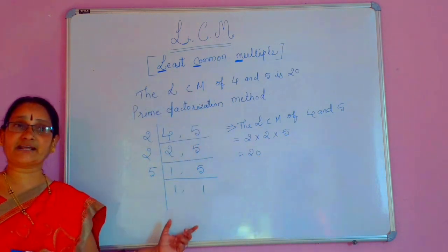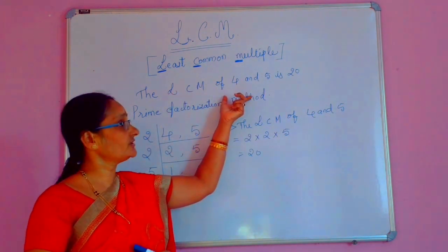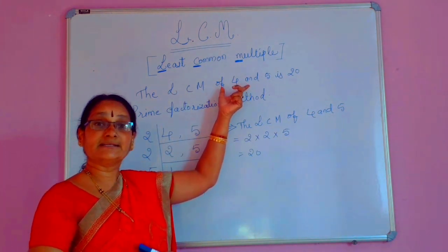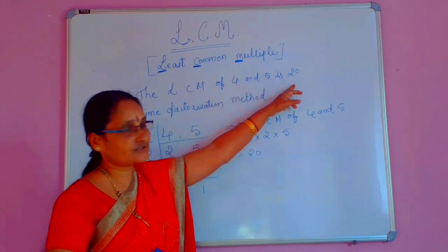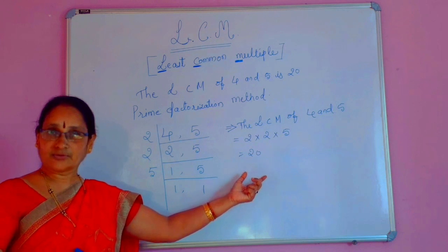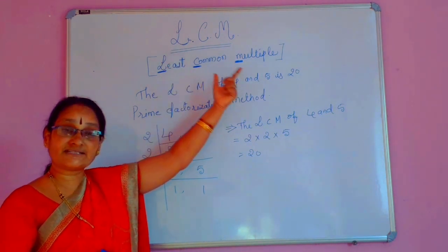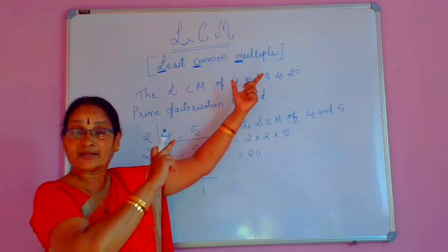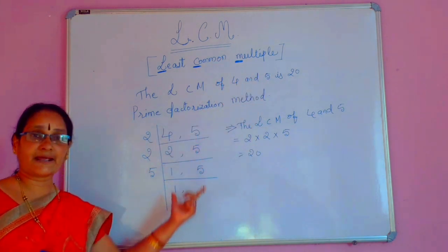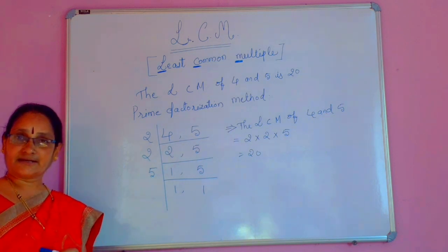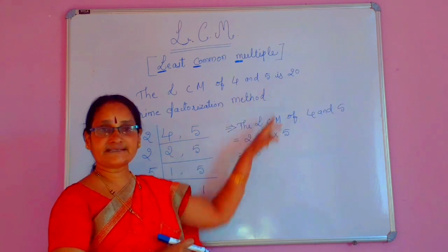By which method did we first find out this LCM? By listing out the multiples of the given numbers — that also gives 20. This also gives 20. Only the methods are different. In the first case, we listed out the multiples. Here, this is the prime factorization method. More different methods are there, but the answer is same.